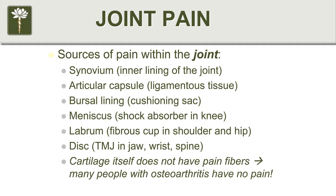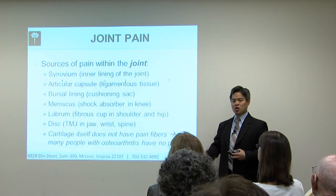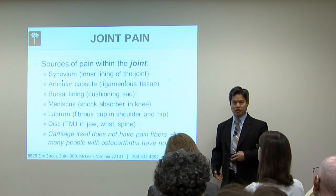The meniscus — a lot of folks have heard about the meniscus in the knee; you hear about meniscal tears. The labrum is a structure that has received a lot of attention over the last 15 or 20 years. It's basically a fibrous cup primarily found in the hip joint as well as the shoulder joint. You hear about baseball pitchers or swimmers that have a labral tear in their shoulder, or runners with a labral tear in their hip.